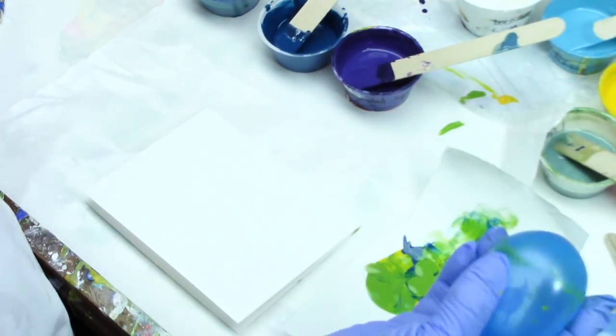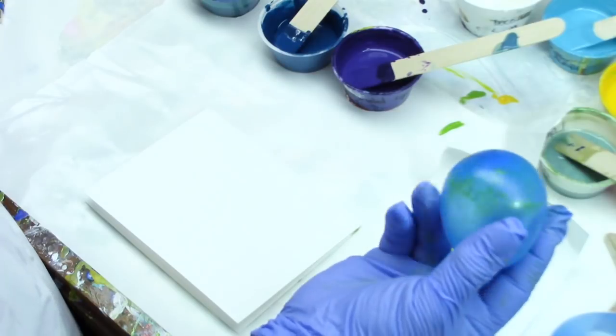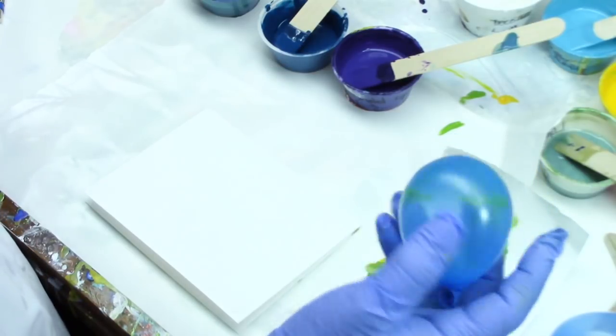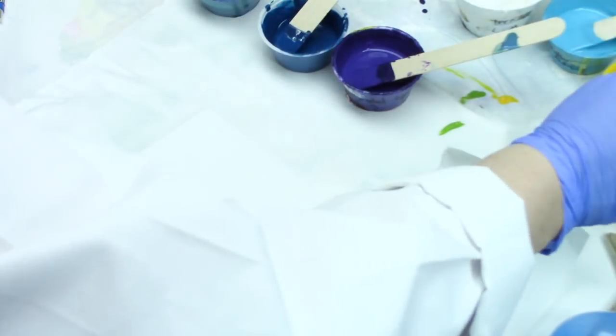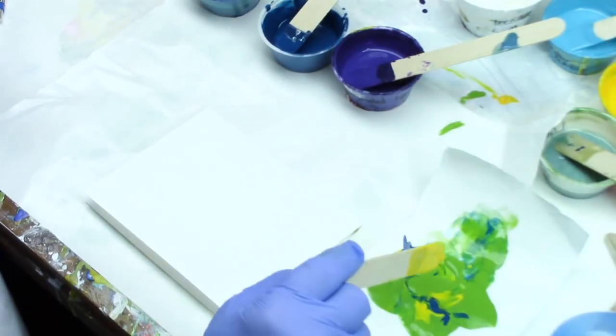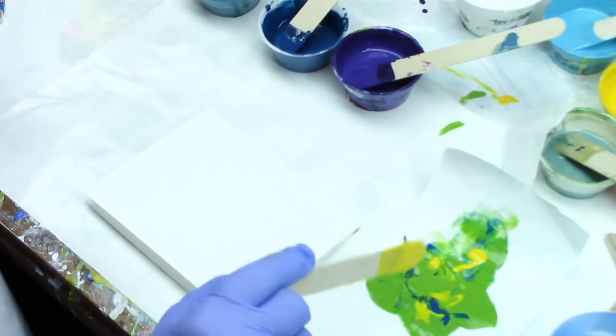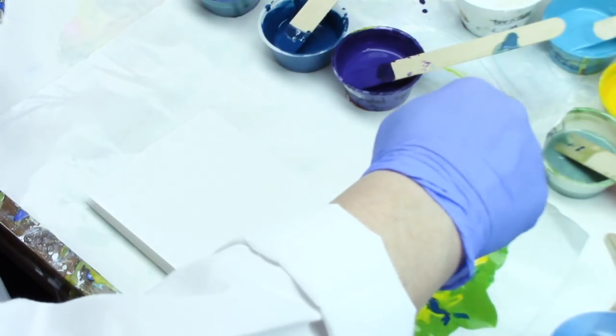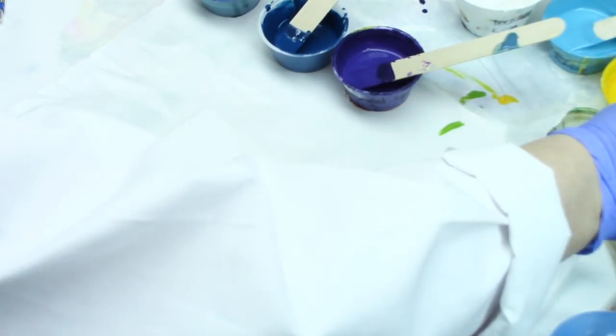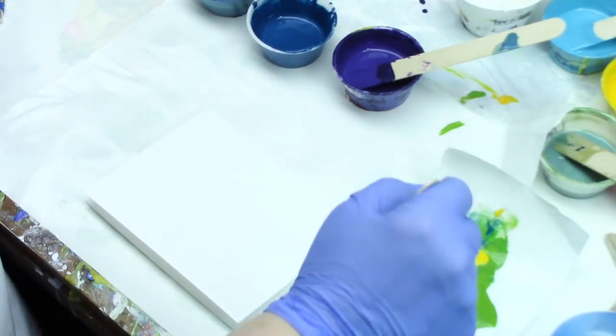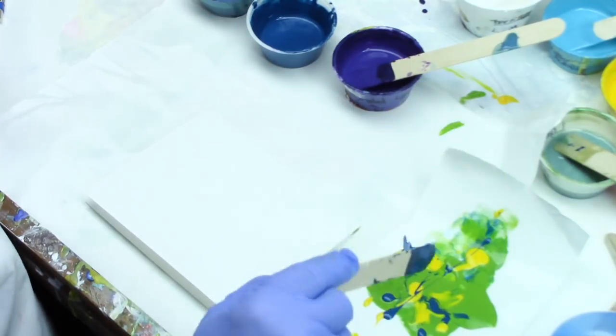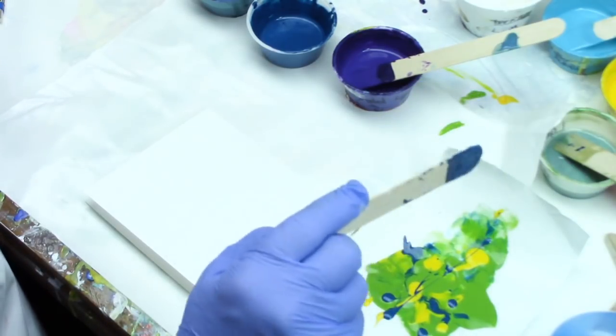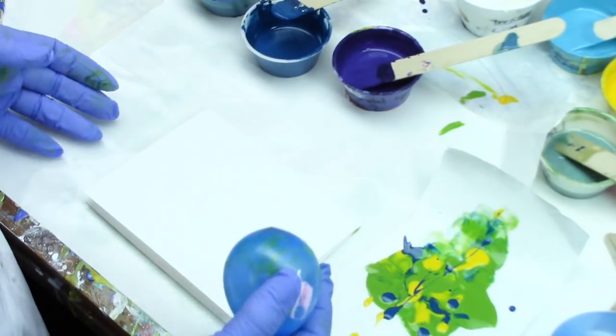I'm starting with a balloon—this one's been used before. They can last for a while. These are just water balloons. I want a little bit more yellow on here, and some darker blue on top of the leaf green. The dark blue gives a chance to have some shadows in the color.